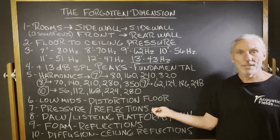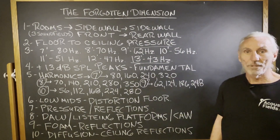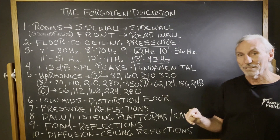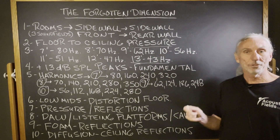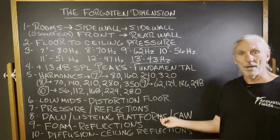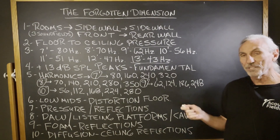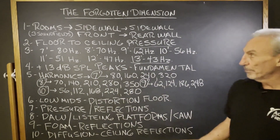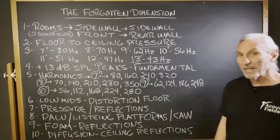So we have two problems in our room: pressure and reflection. These frequencies are all fundamental frequencies caused by excessive pressure. Then we have the reflections off the floor to the ceiling, and those are the middle and high issues that we have to be careful with. We have a program with our platforms — it's the same technology that's in our ACDA series and our carbon panels, incorporated into a floor platform.